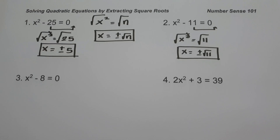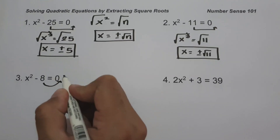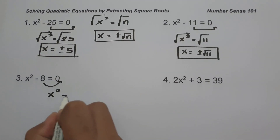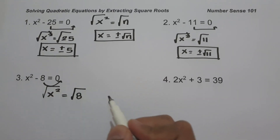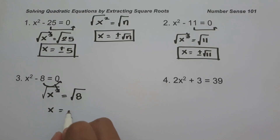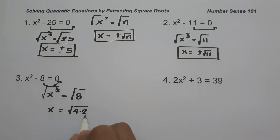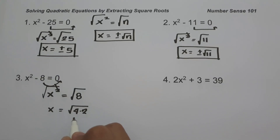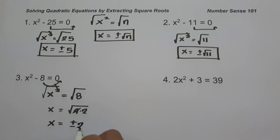On number three, we have x² - 8 = 0. Let us move negative 8 to the other side, giving us x² = 8. Taking the square root of both sides, x is the square root of 8. Since 8 is factorable, we find two numbers that multiply to 8 where one is a perfect square: that is 4 times 2. So the square root of 4 is positive and negative 2, times the square root of 2, and this will be our answer.